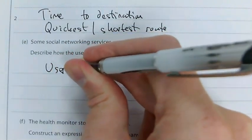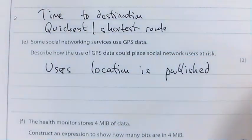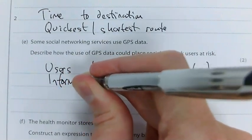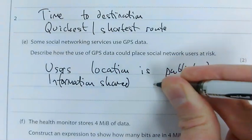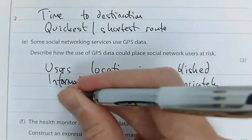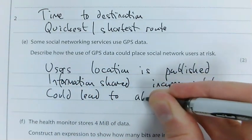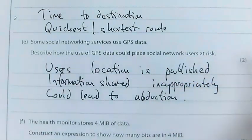The user's location is published. One mark. Why is that a problem? Information shared inappropriately could lead to abduction. Just really explain why that's a problem - because someone could find your location and go and meet you without your knowledge, go and meet you at that location.